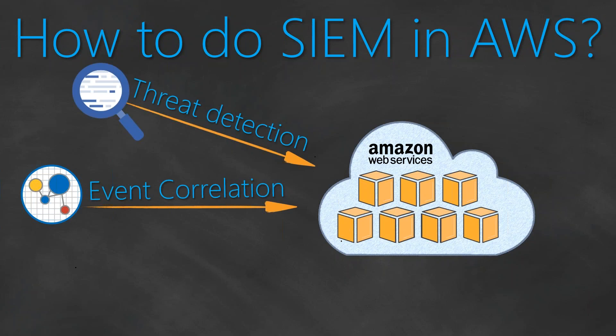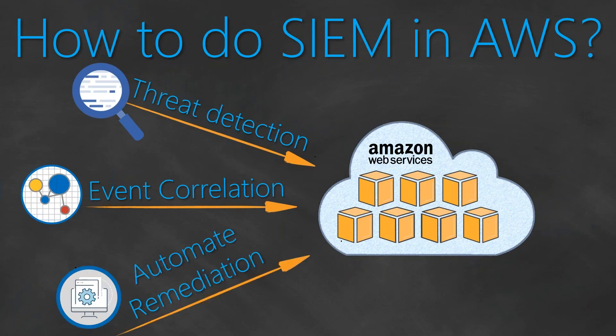And you want to do this across all your accounts in AWS. Not just that — you want to take automated remediation actions. Say for example, if there is an instance which is performing a malicious attack on other instances, you want to black box it or stop it temporarily so that you can take remedial action.